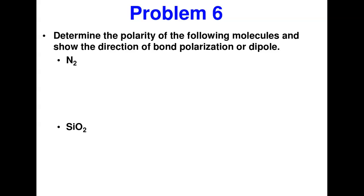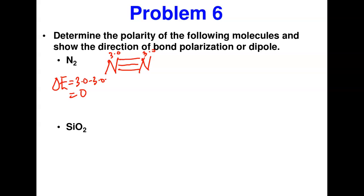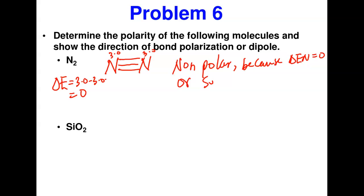For N₂: both nitrogen atoms have electronegativity 3.0, so ΔEN = 0. There is no bond polarization. The molecule is also symmetrical. Therefore N₂ is non-polar because ΔEN = 0 and it is perfectly symmetric.